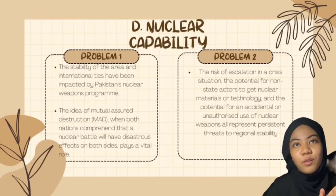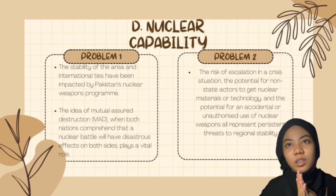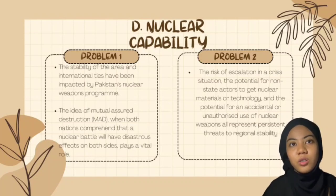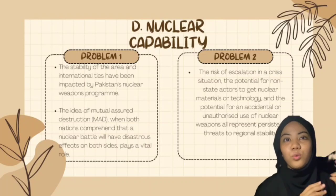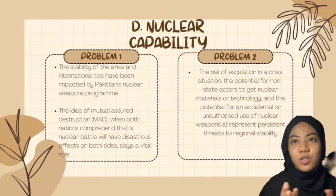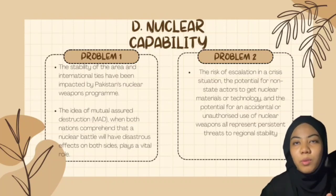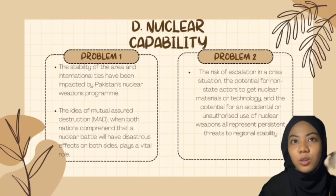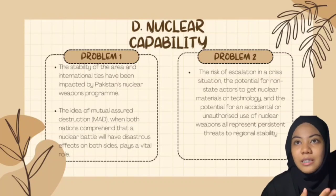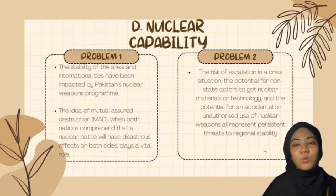The presence of nuclear weapons in the region has created a delicate power dynamic between Pakistan and India. Nuclear deterrence is based on the concept of mutual assured destruction and has largely prevented major conflict between the nations despite ongoing tensions and sporadic border clashes. However, the stability offered by nuclear deterrence is not without risk — the potential for escalation in crisis situations, the risk of non-state actors acquiring nuclear materials, and the possibility of accidental or unauthorized use of nuclear weapons remain ongoing threats to regional stability.